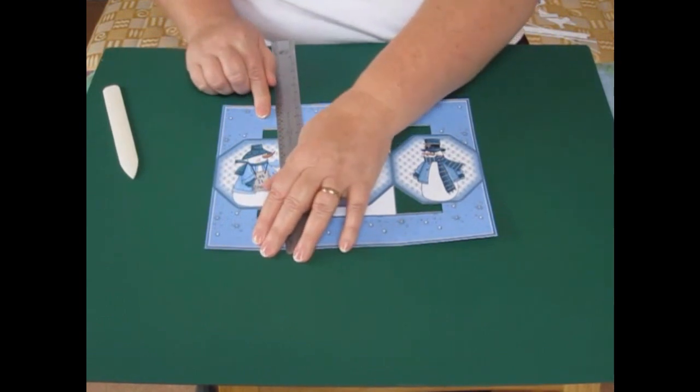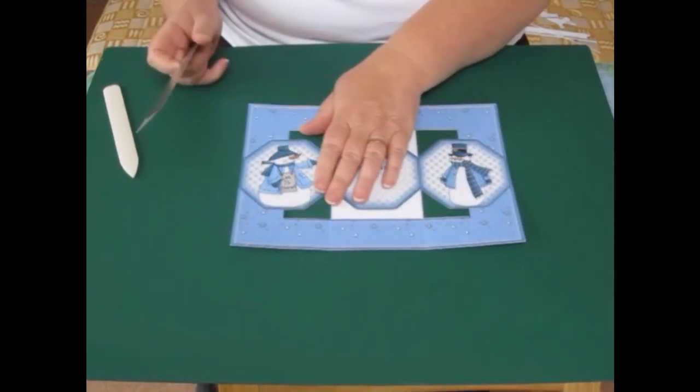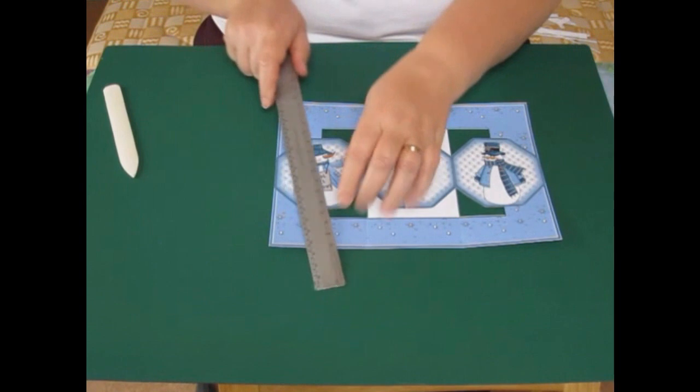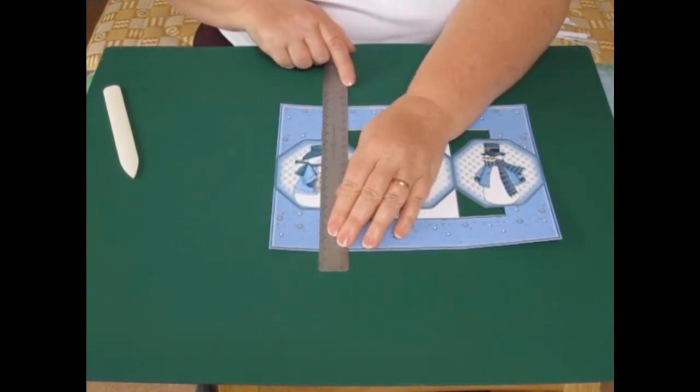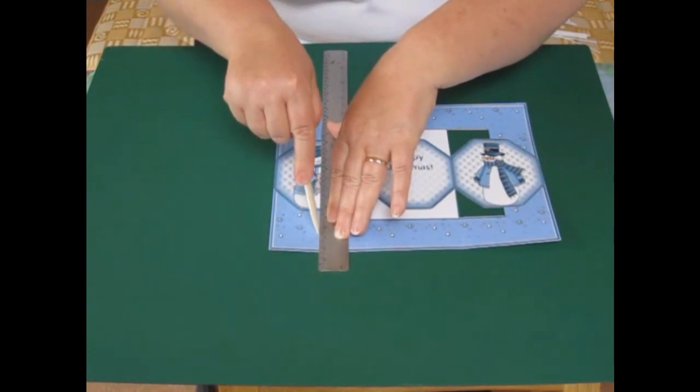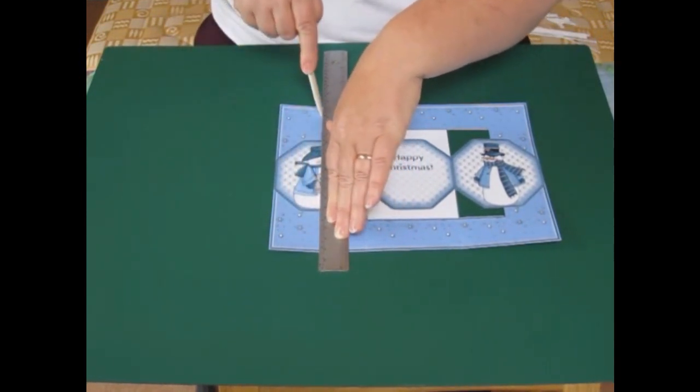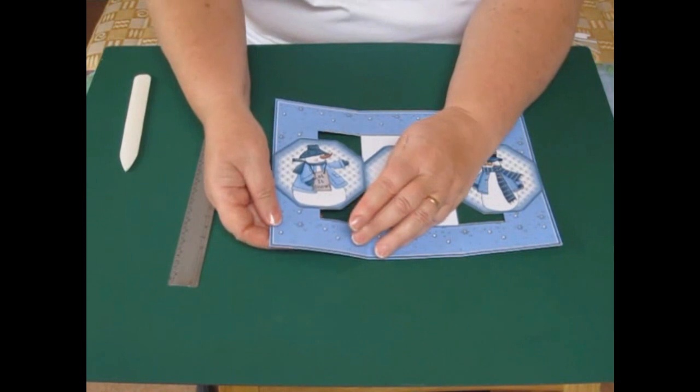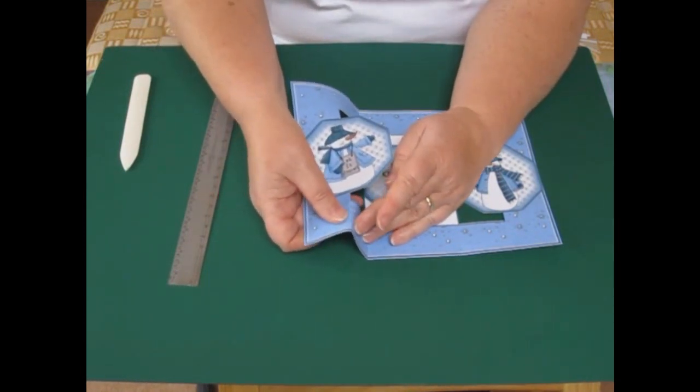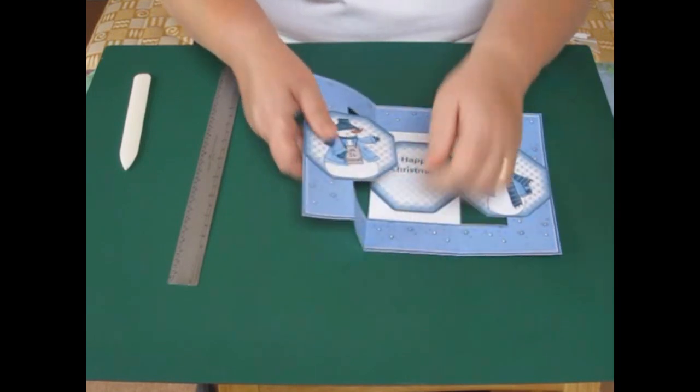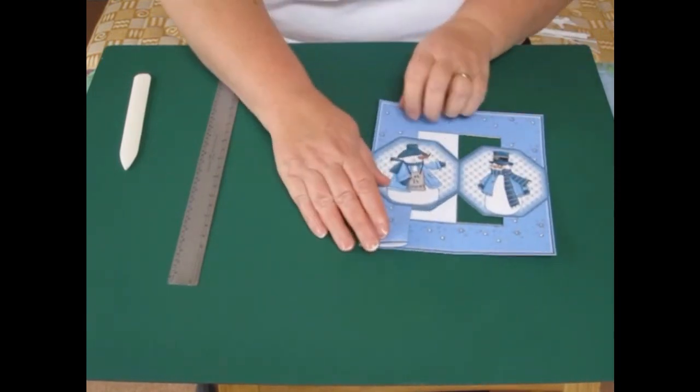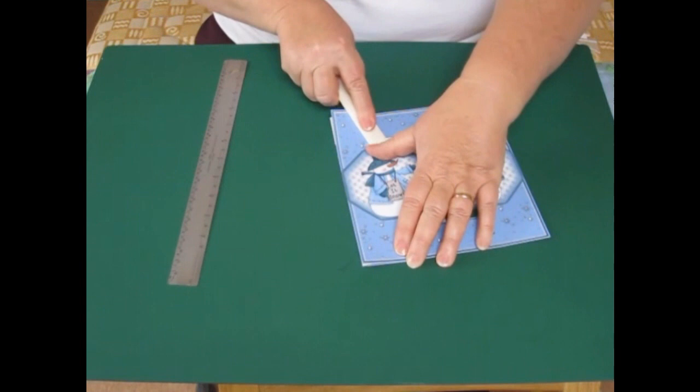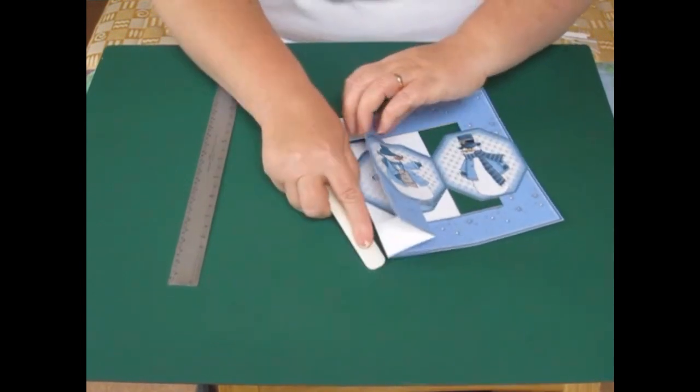And now we have to make a mountain fold down the centre of the left and the right hand panels. But, the problem is that we can't score through this panel and fold that. We want that to stay straight. So, we just score up to the bottom of the panel and from the top of the panel up to the top. And we don't fold against the ruler this time. We've got to then just ease it. And because we've scored it, the folding is quite easy. That's the bottom bit and the top bit.